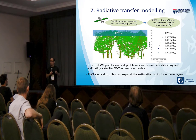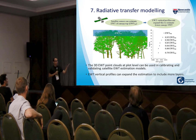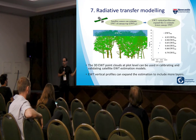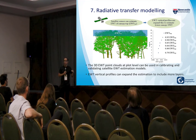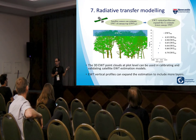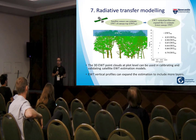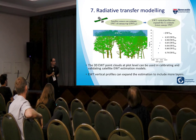Since satellites are monitoring only the canopy top, if we can get the vertical profile of water content from TLS, we can use this to expand the satellite estimation and add more layers to the map. Whoever is using the satellite to monitor forest health can now see the water content in the lower canopy as well, which might improve decision-making during drought conditions.